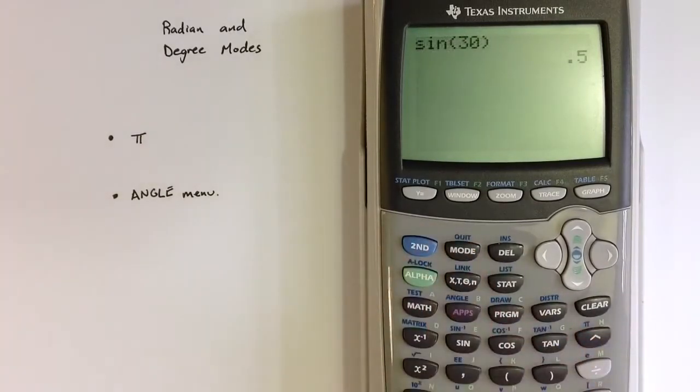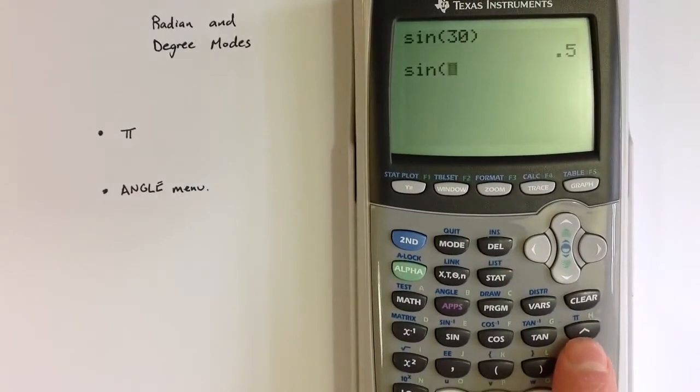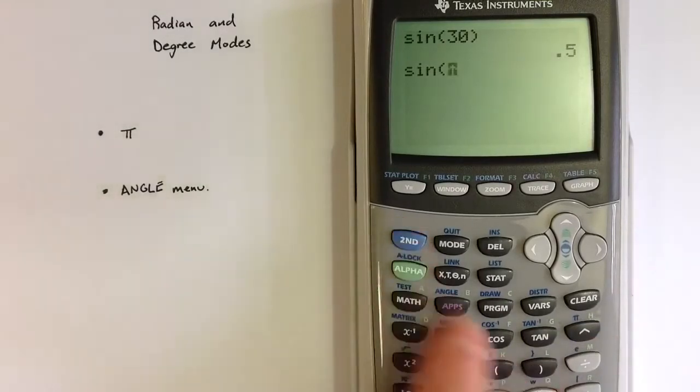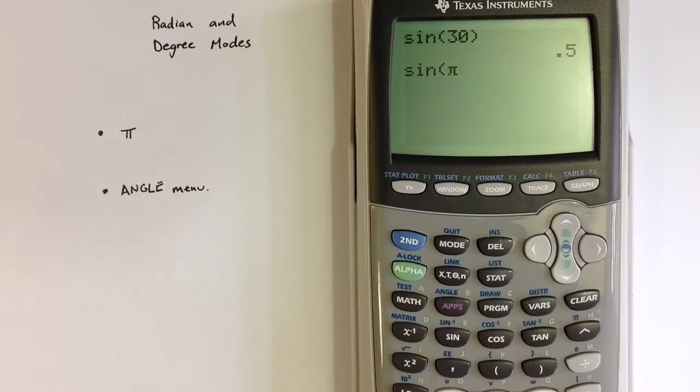If I now calculate sine of some angle, it's going to be sine of that angle in terms of radians. For 30 degrees, that's the same as pi over 6 radians. Above the caret key, a second command allows us to type in pi. Pi divided by 6 gives us the same result.